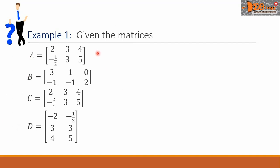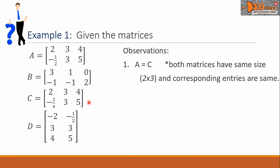We're going to compare matrix A to the three other matrices. Number one, matrix A is equal to matrix C. Both matrices have the same size, that is 2 by 3, and corresponding entries are the same.